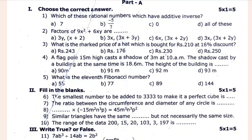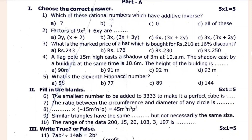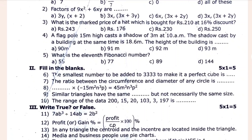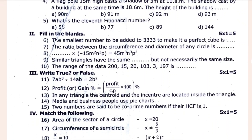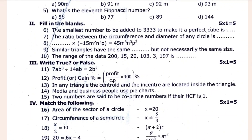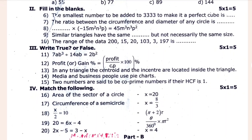Let's see which of these numbers have additive inverses. The smallest number to be added to 3333 to make it a perfect cube is blank. The ratio between the circumference and diameter of any circle is blank. 81 blank multiplied minus 15m²n³ cube p is equal to 45m³n cube and p². Similar triangles have the same blank but not the same size. The range of the data is 215, 213, 197, east blank.